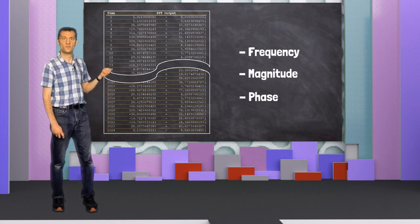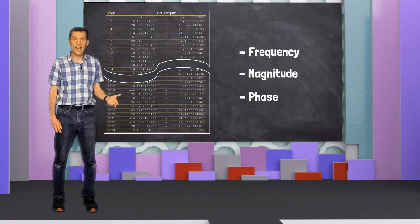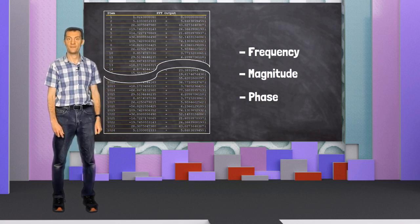If the output of the FFT gives you a list of all the sinusoids present in your signal, how do we work out the magnitude and phase for each sinusoid? We'll find out in the next video.